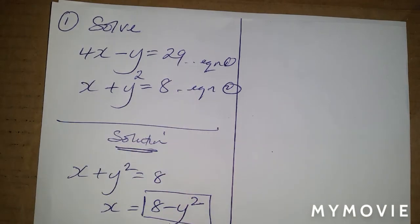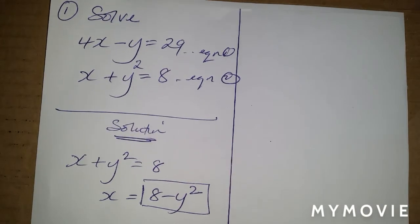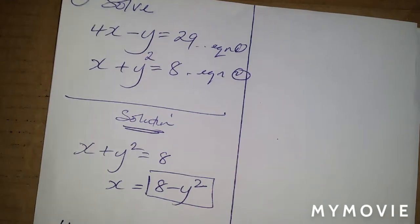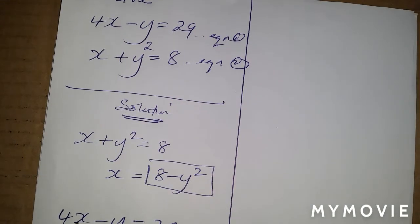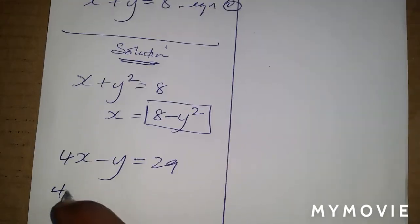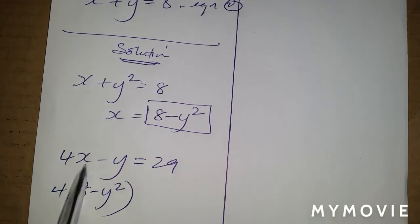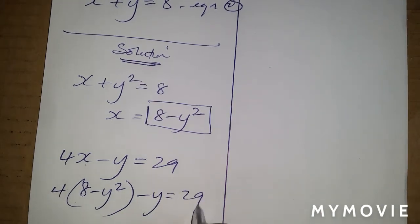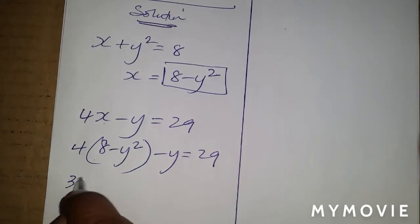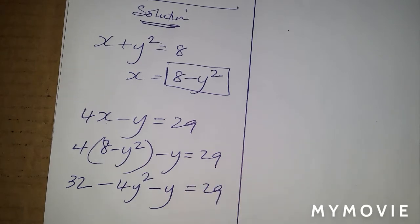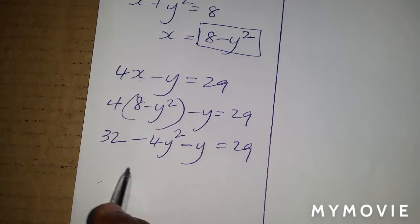I'm going to show you that you get the same results, so you can be dynamic in your algorithm when working on the question. The linear equation is 4x minus y equals 29. Instead of x, I'm going to substitute what x is equal to, so it'll be 4 times open bracket 8 minus y squared, replacing x with whatever x equals, minus y equals 29. Expanding gives us 32 minus 4y squared.